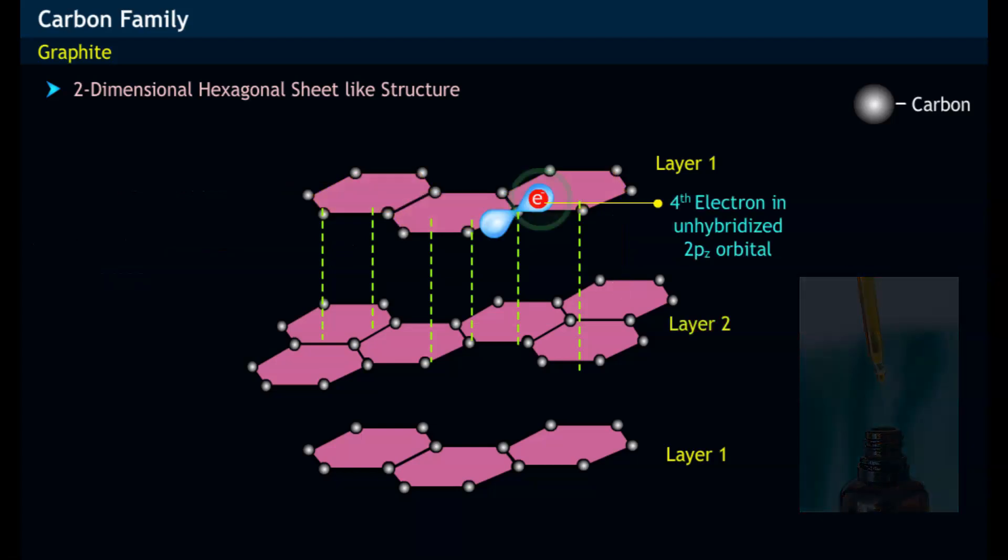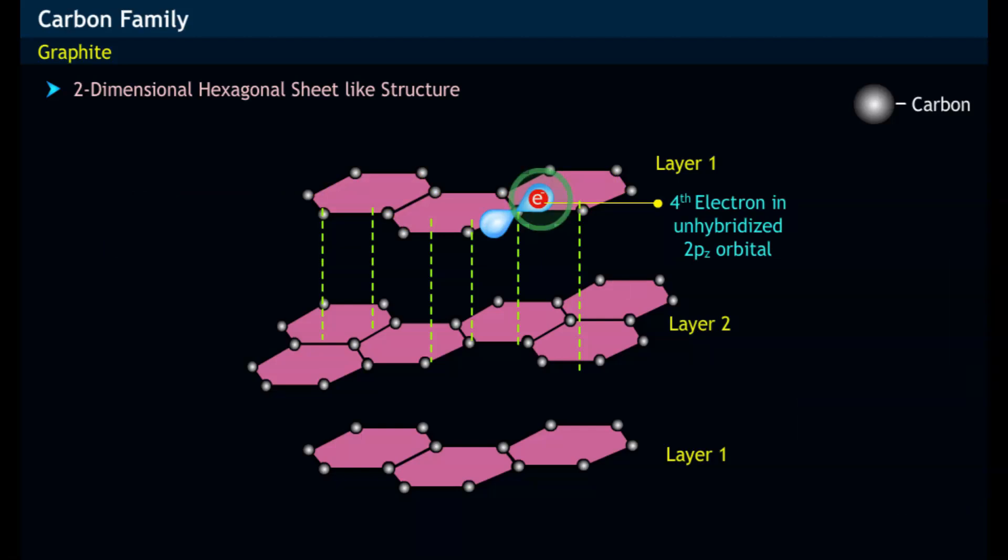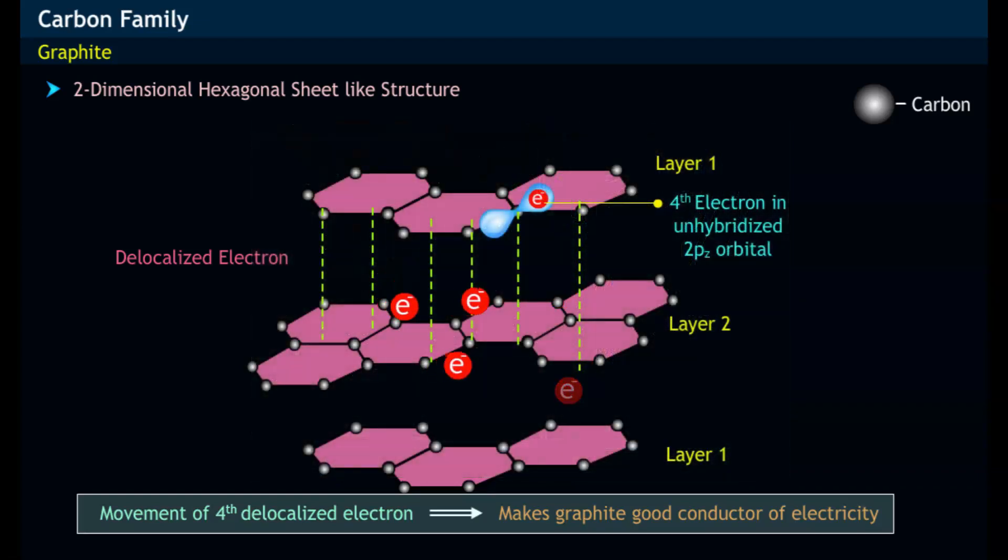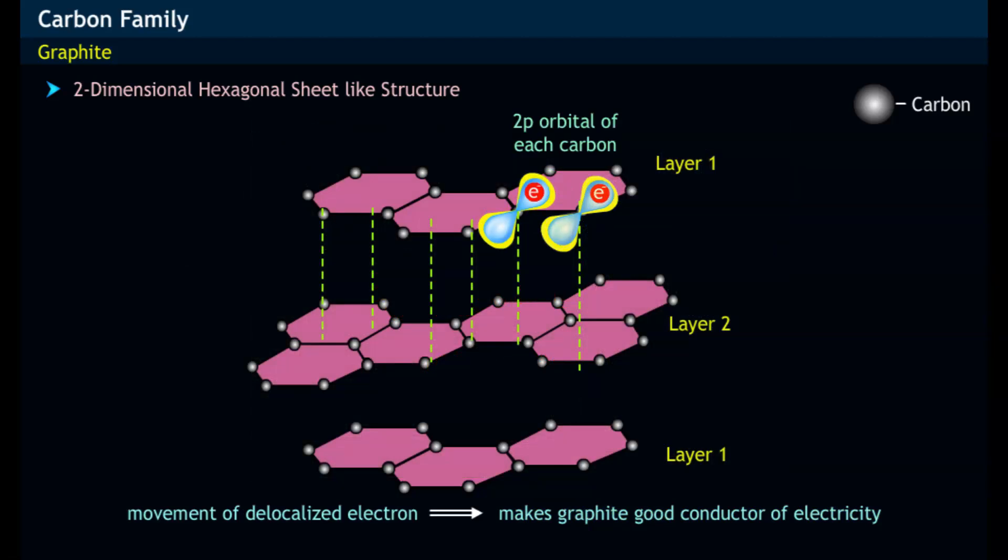The fourth electron of each carbon atom in graphite is free and moves freely between the layers. That is, the fourth electron is delocalized, which makes graphite a good conductor of electricity.